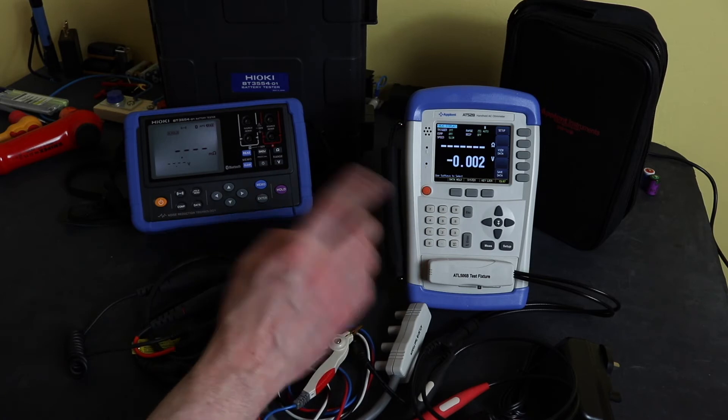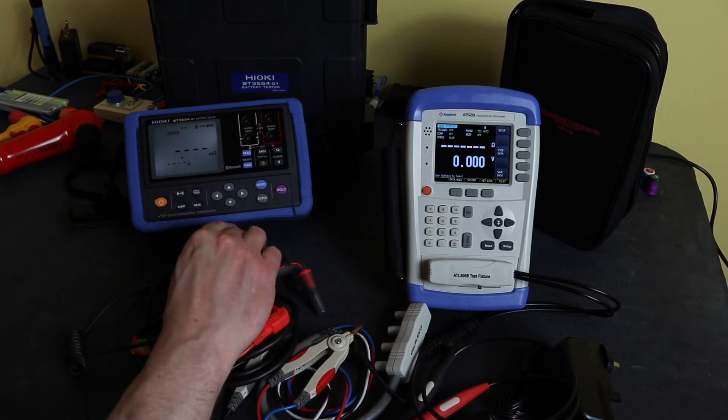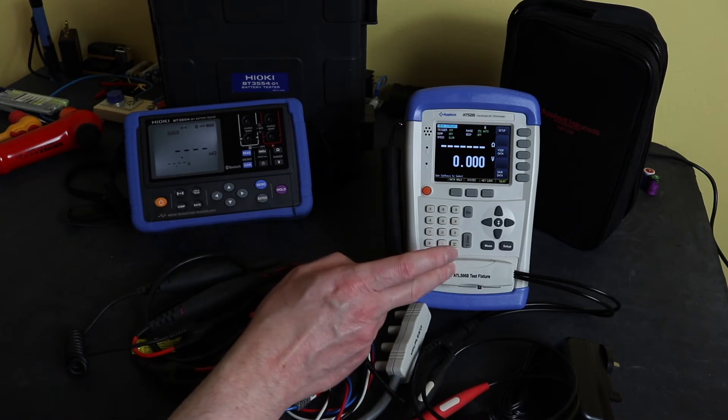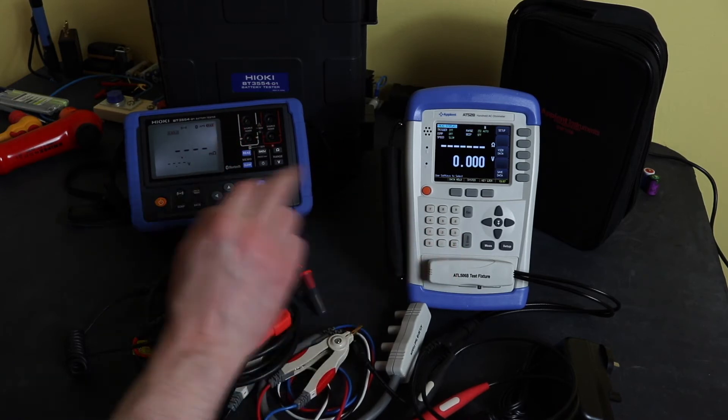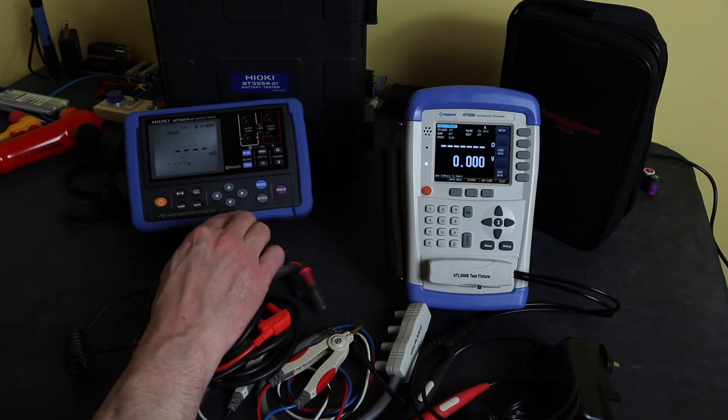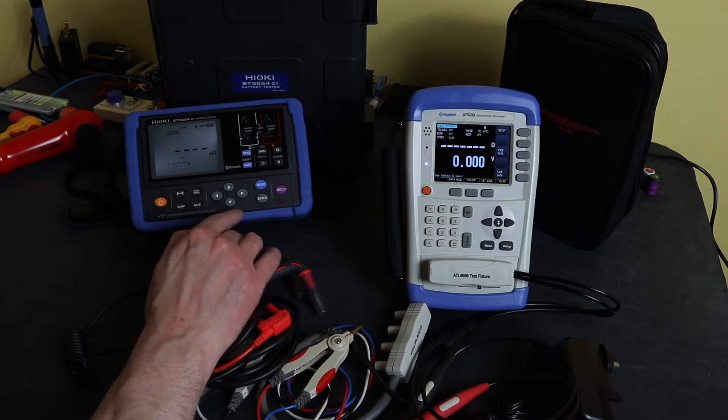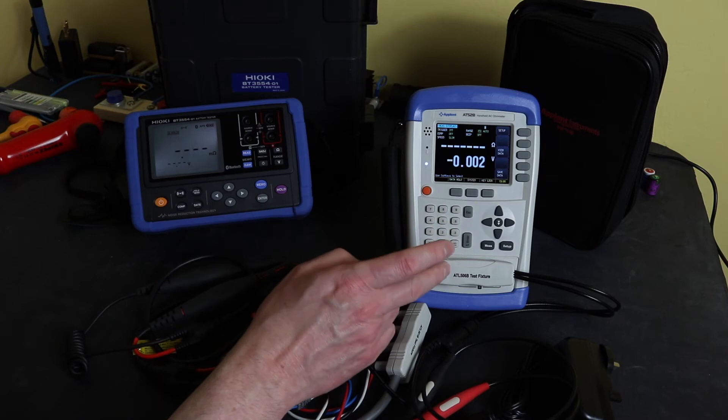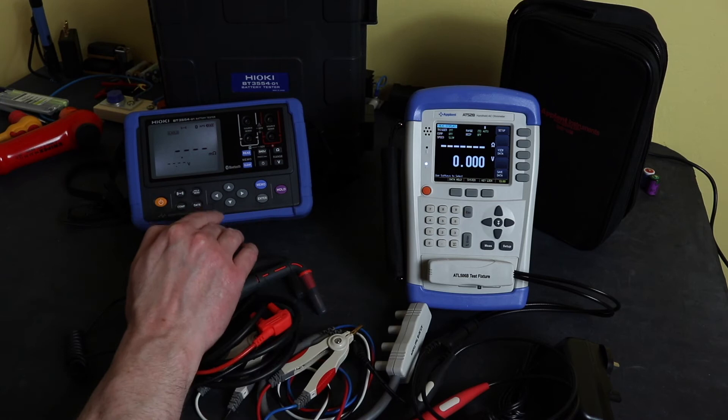Both of these units have memory on them. This does 6,000 records, this will only do 2,000 records. In comparison to how that works on this, this splits the memory up into 12 slots so I can do 12 different sets of batteries and test them and save them independently, whereas this is just a basic one set of records 1 to 2,000. So I kind of prefer the way the memory is set up on this - it's much more user friendly and versatile for my kind of work.